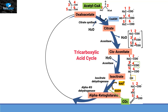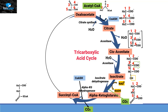Alpha-ketoglutarate, with the help of an enzyme called alpha-ketoglutarate dehydrogenase, will convert itself into succinyl-CoA. Coenzyme A attaches here with the release of carbon dioxide from position six. Again, this enzyme is a dehydrogenase, so it removes a hydrogen group — in this case from the alpha-ketoglutarate — and this H is gained by NAD+, converting it into NADH.